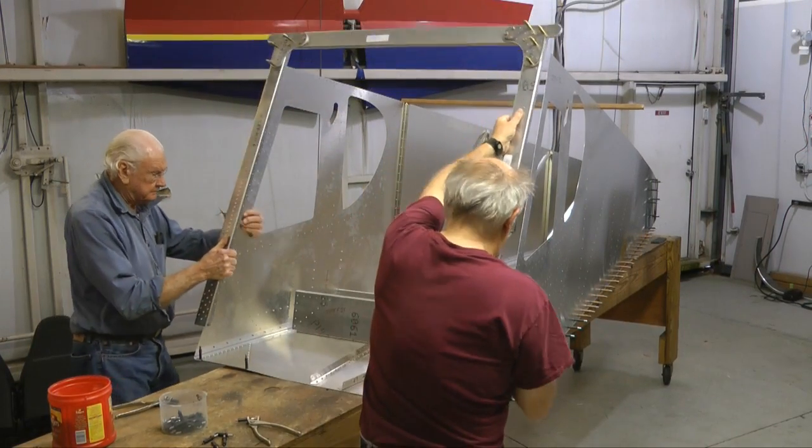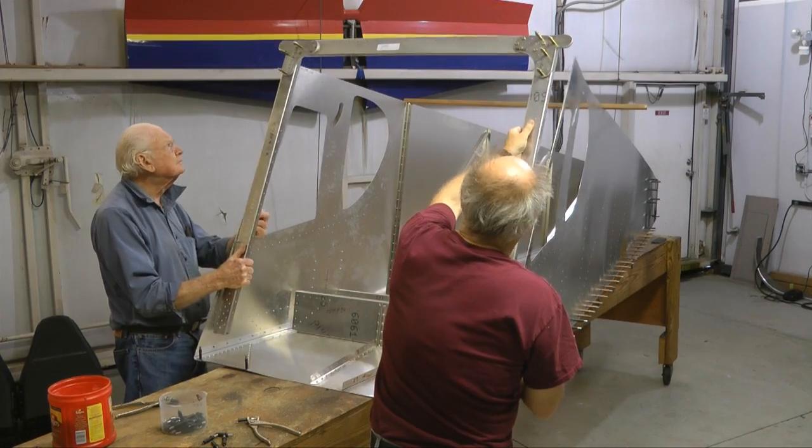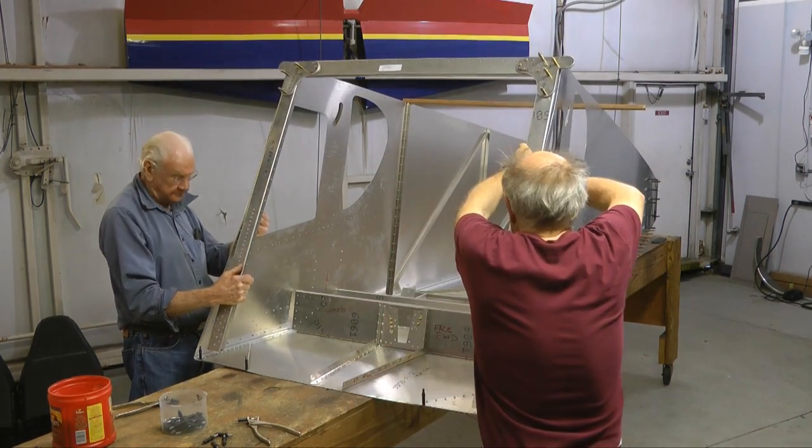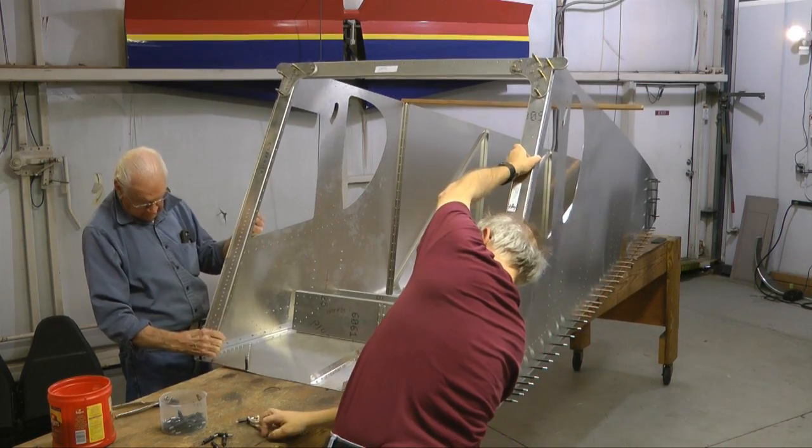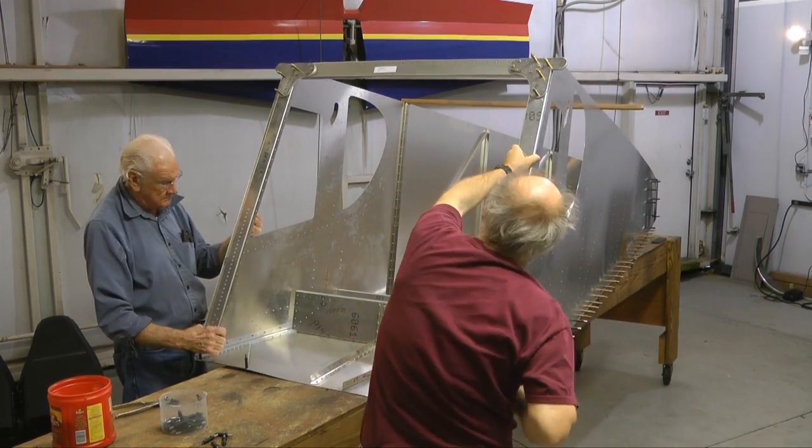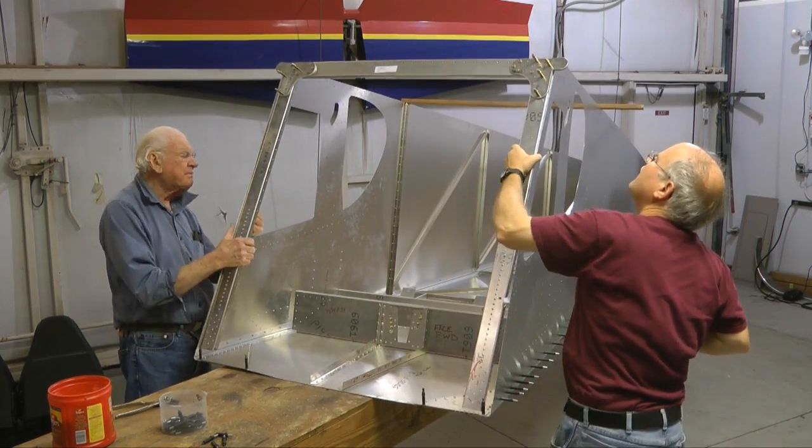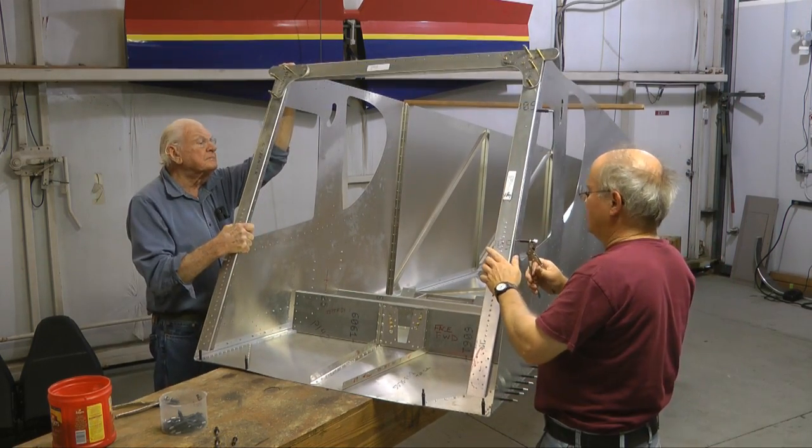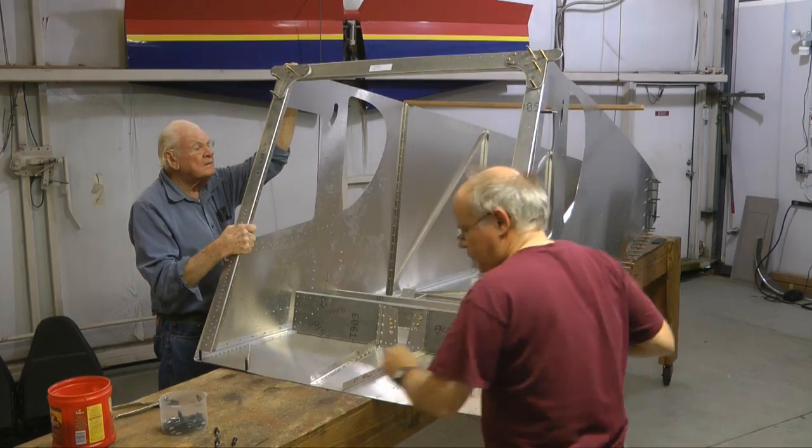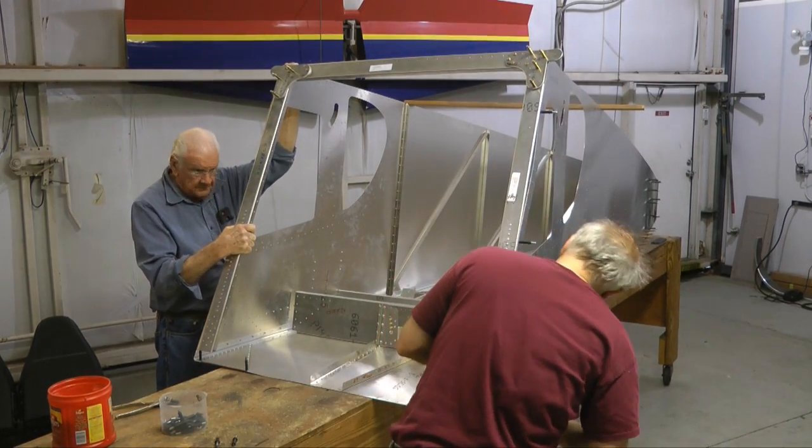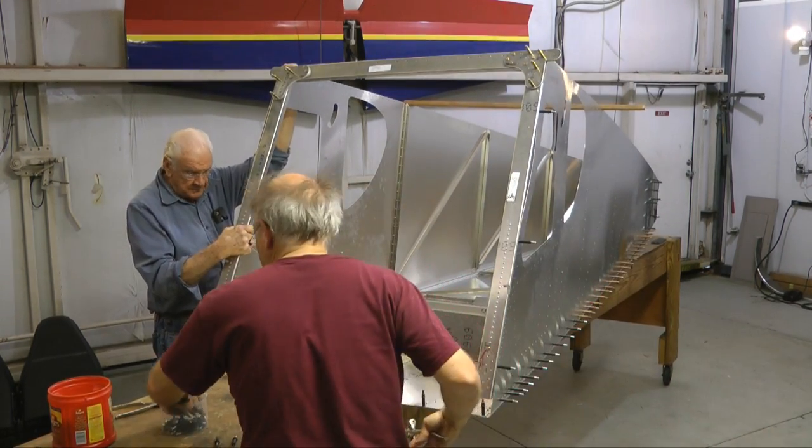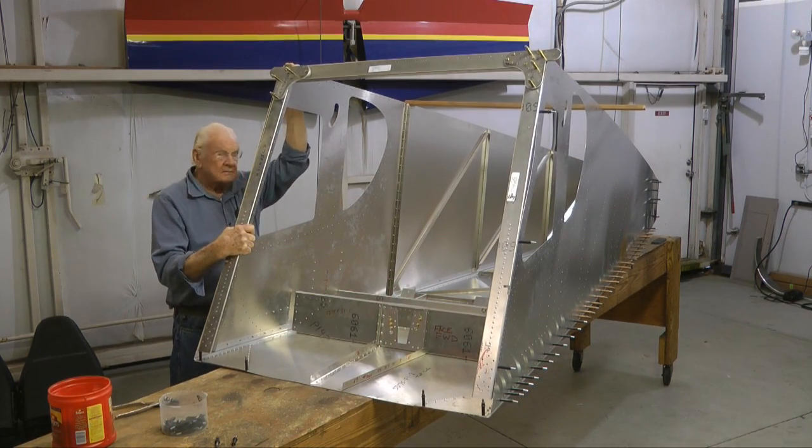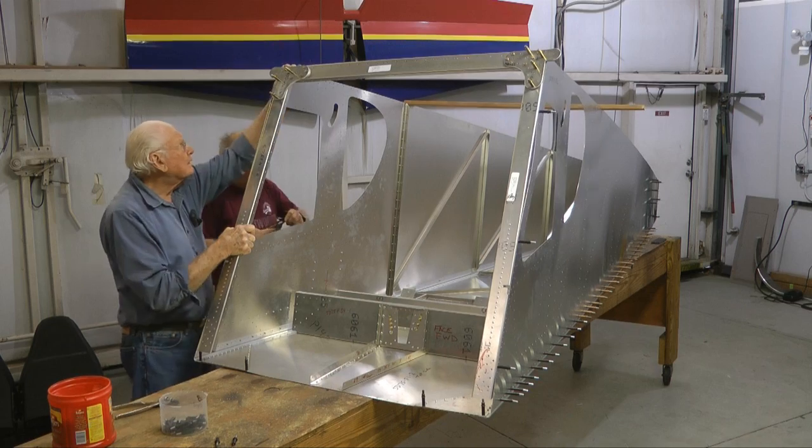With both sides on, we can now install the assembly we created earlier with the wing attach tabs. This will add some rigidity to the front of the fuselage and we simply line up all of the pre-drilled holes and Cleco. This will also help us when we install the topskin.